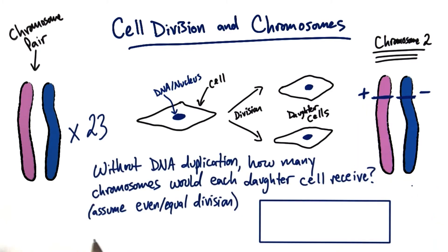If we assume that there's not any DNA duplication before cell division, how many chromosomes would each of these daughter cells receive? And assume an even or equal division in this process, even though there's no DNA duplication. Go ahead and put the number you think in this box here.